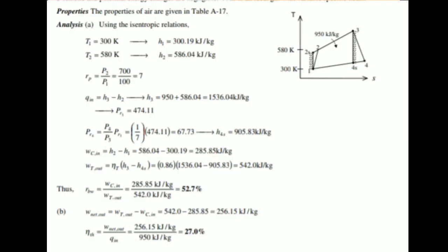Using the isentropic relation, T1 is equal to 300K and H1 is equal to 300.19 kilojoules per kilogram. T2 is equal to 580K and H2 is equal to 586.04 kilojoules per kilogram.